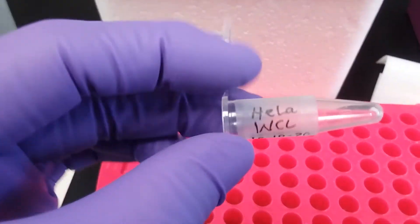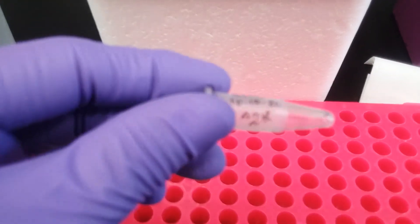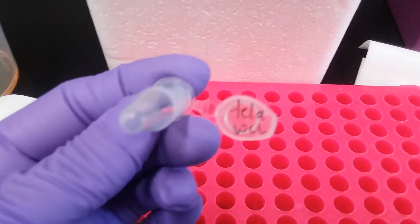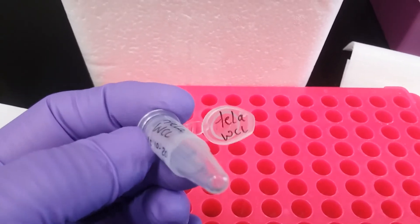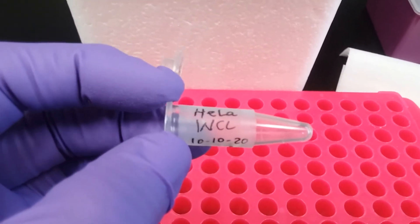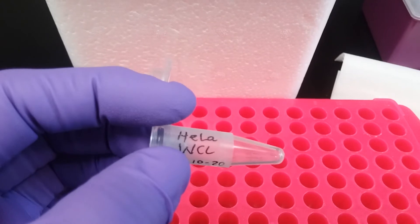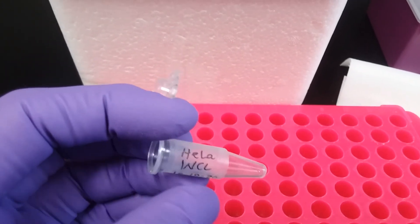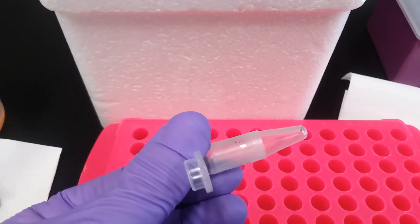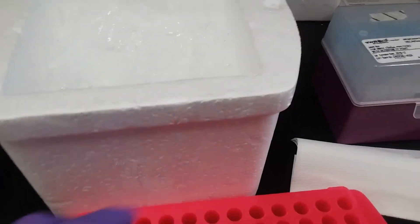In the meantime, I've labeled myself an archived labeled tube. It says HeLa whole cell lysate, the date and my initials. I actually labeled the top as well so I can find it quickly. A little tip is that there's Triton in this whole cell lysate so you can easily wipe off your label. So I just use a little bit of scotch tape to keep that label in place. Pretty simple.